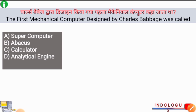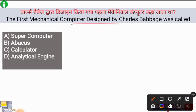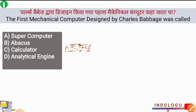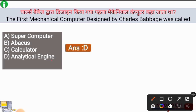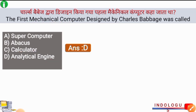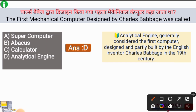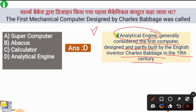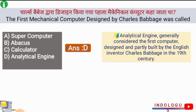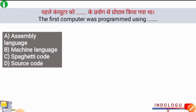Next question: The first mechanical computer designed by Charles Babbage was called what? The right answer is option D, Analytical Engine. The Analytical Engine was the name of the first mechanical computer, designed by Charles Babbage, who is also considered the father of computers. It was generally considered the first computer, designed and partially built in the 19th century. You have to remember this name: Analytical Engine.